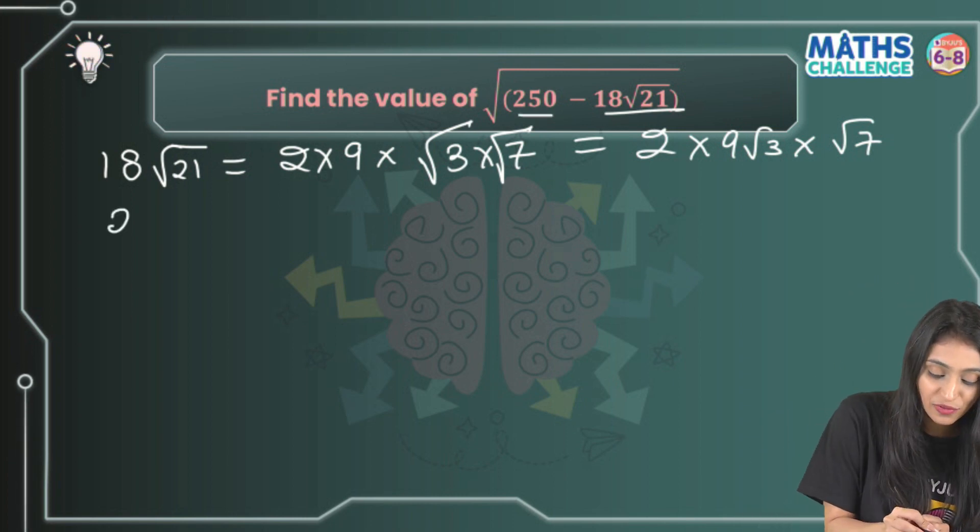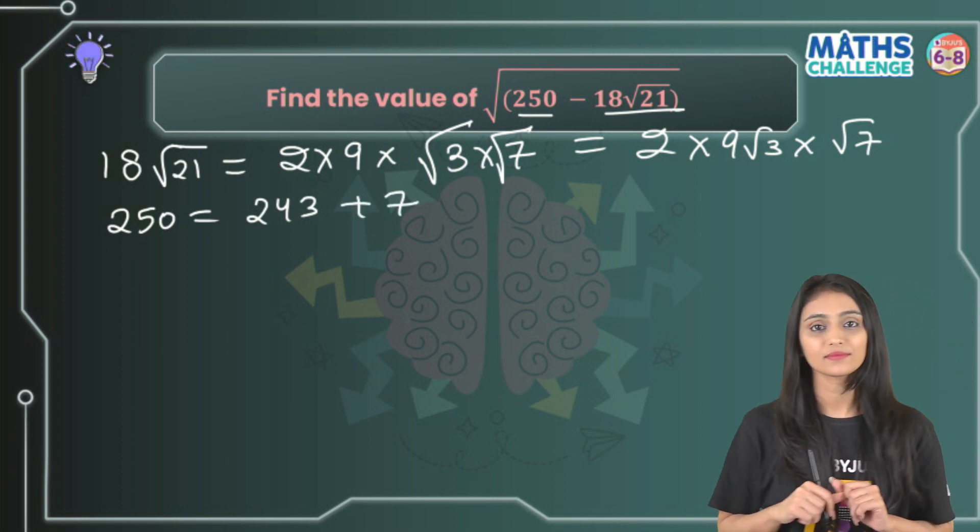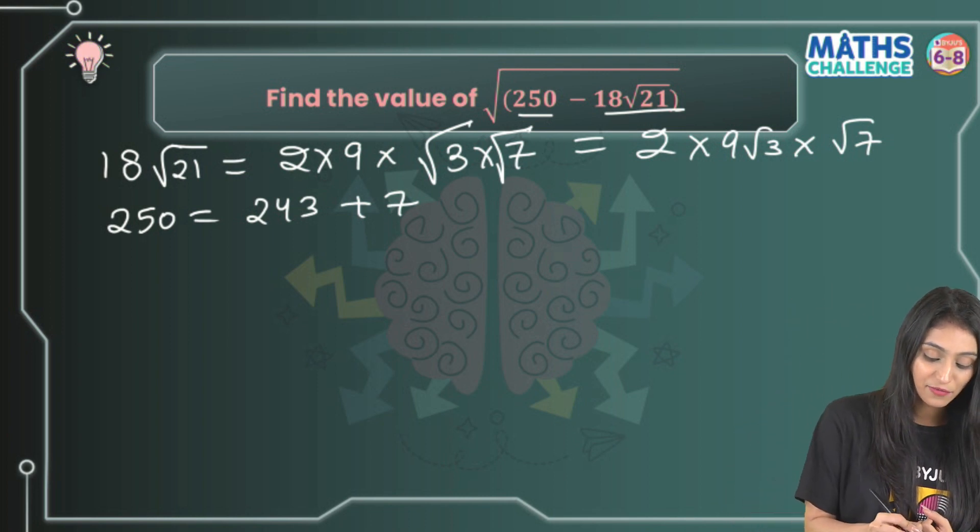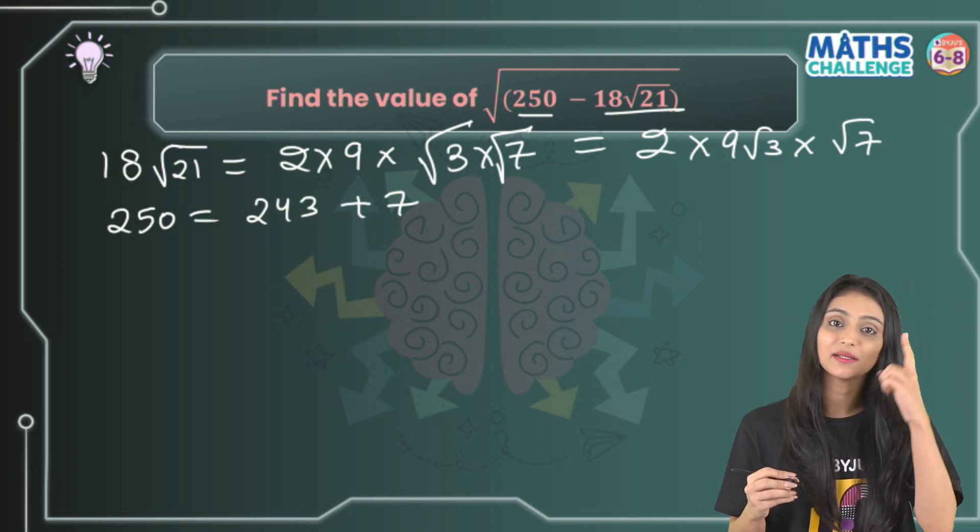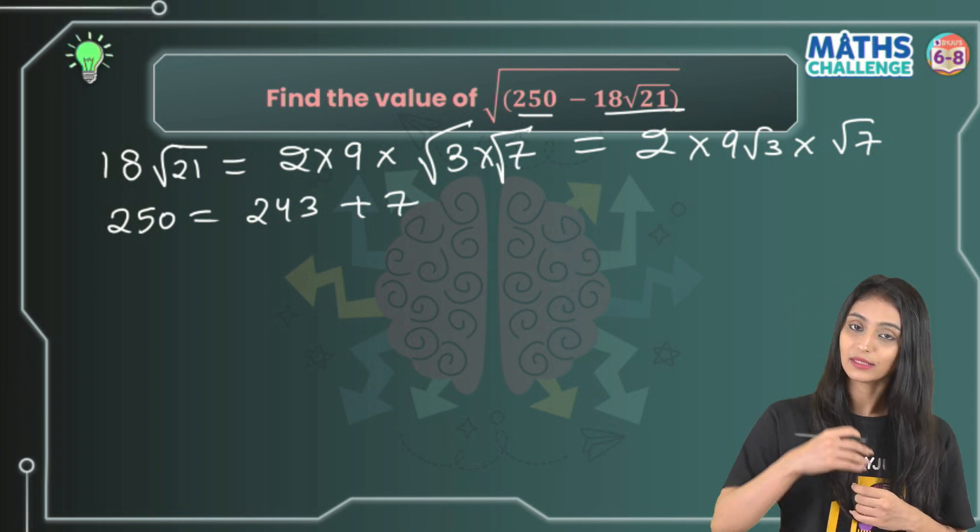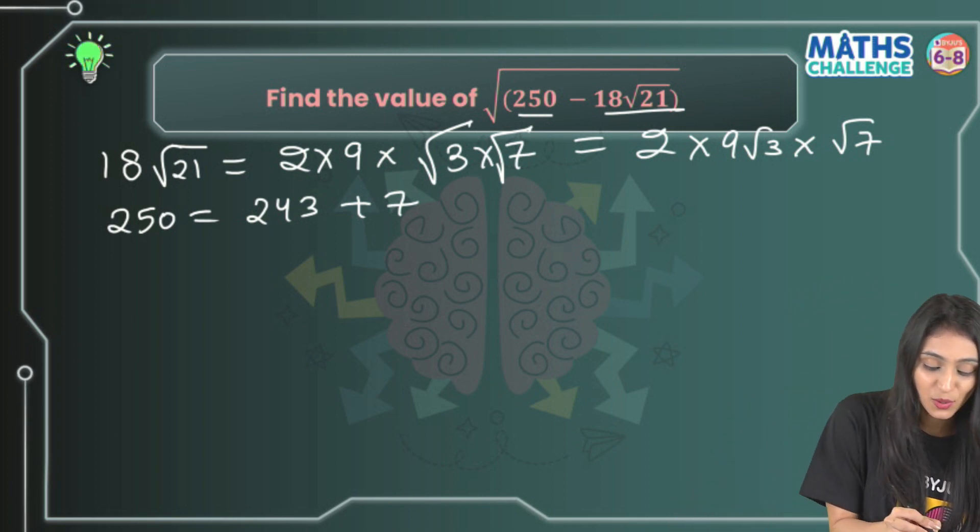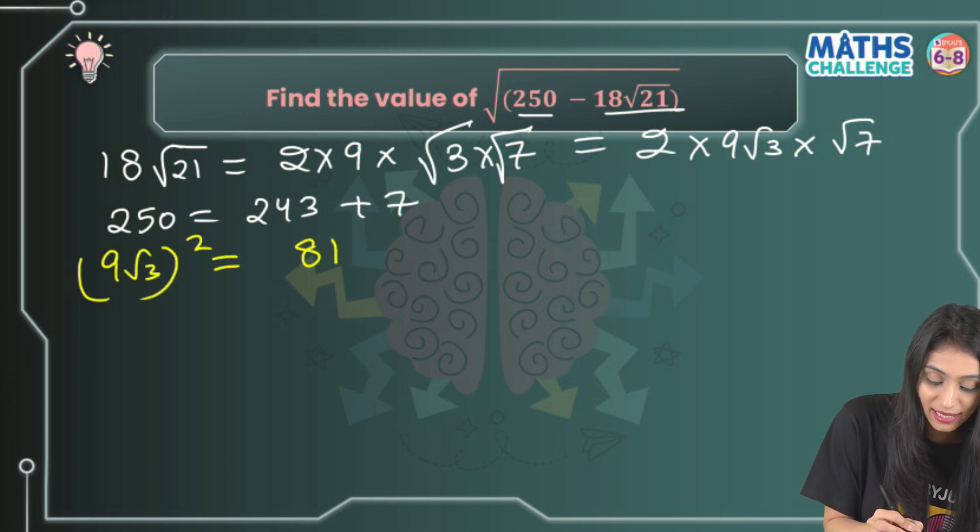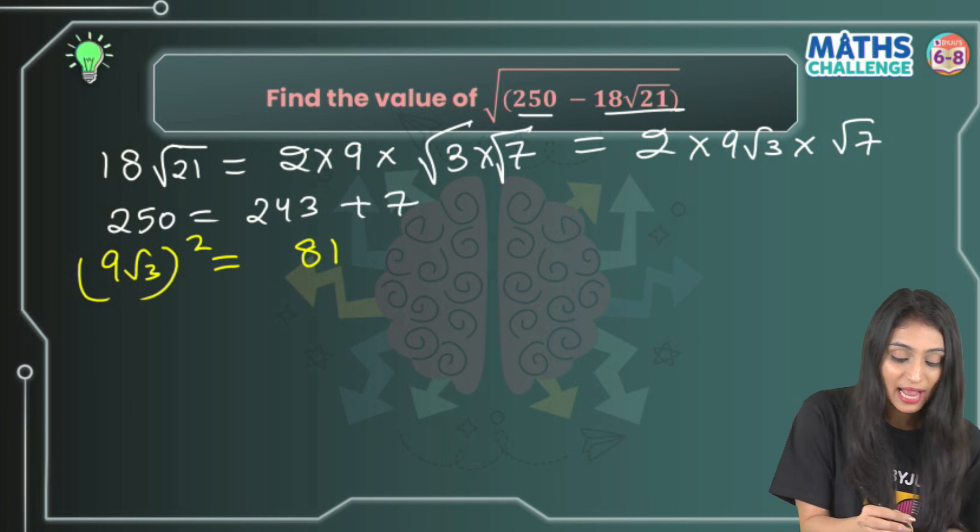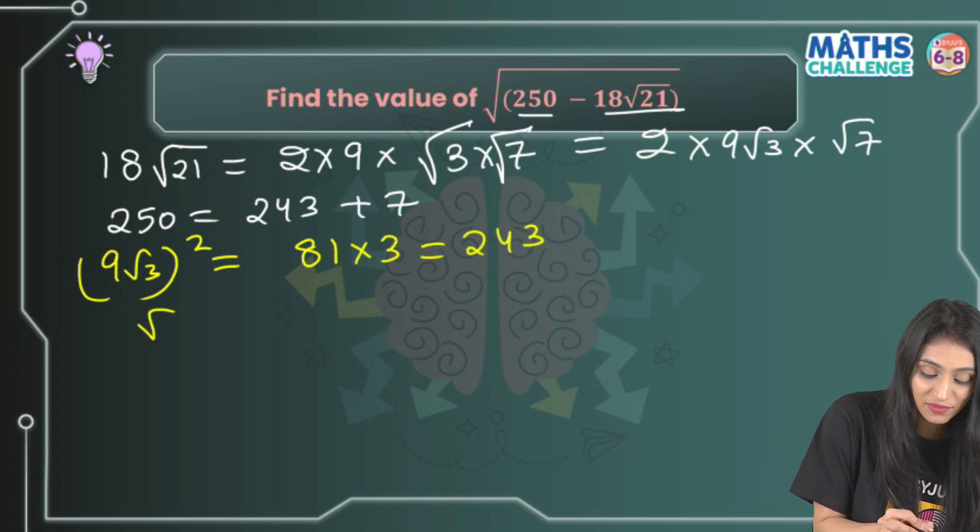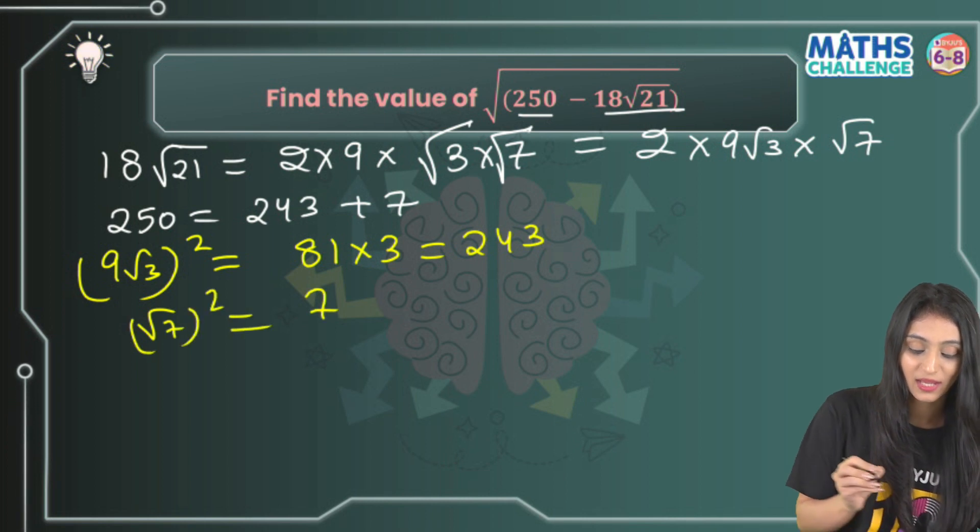Now think about it, this 250 could be written as 243 plus 7. If you carefully observe, these kinds of things will come with practice. These calculations can be done mentally, but your observation has to be really good, and this will get better the more you practice. This 9√3, if you take the square of it, is 9² × (√3)² = 81 × 3 = 243, and √7 square is 7.